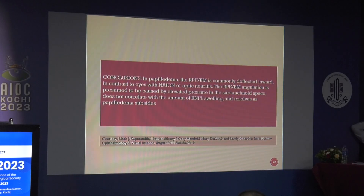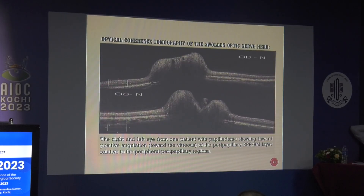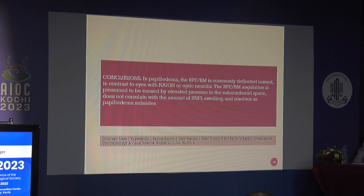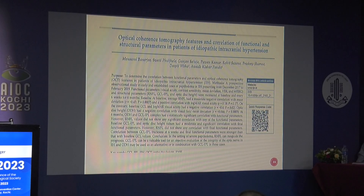A study by Mark J. Kupersmith showed positive inward angulation of the peripapillary RPE and basement membrane relative to the peripheral peripapillary region — a positive angulation inward toward the vitreous. They concluded that RPE basement membrane is commonly deflected inward in papilledema, in contrast to eyes with NAION or optic neuritis where this finding was not present. This angulation is presumed to be caused by elevated pressure in the subarachnoid space, but it does not correlate with the amount of RNFL thickness.